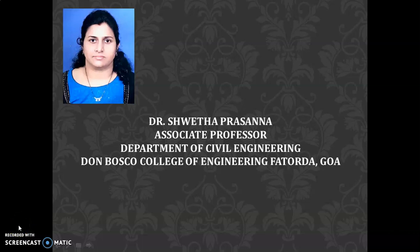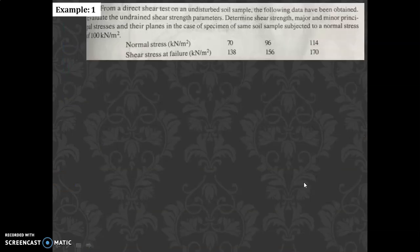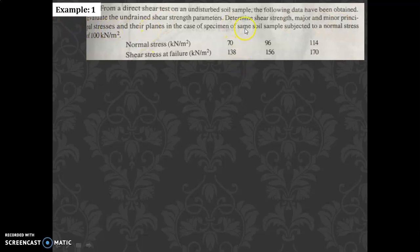Let us discuss some more examples on shear strength of soil. In this example, from a direct shear test on an undisturbed soil sample, the following data have been obtained. We need to evaluate the undrained shear strength parameters, determine shear strength, major and minor principal stresses and their planes for a specimen subjected to normal stress of 100 kN/m². The given normal stress values are 70, 96, and 114, and shear stress at failure is 138, 156, 172, and 170.